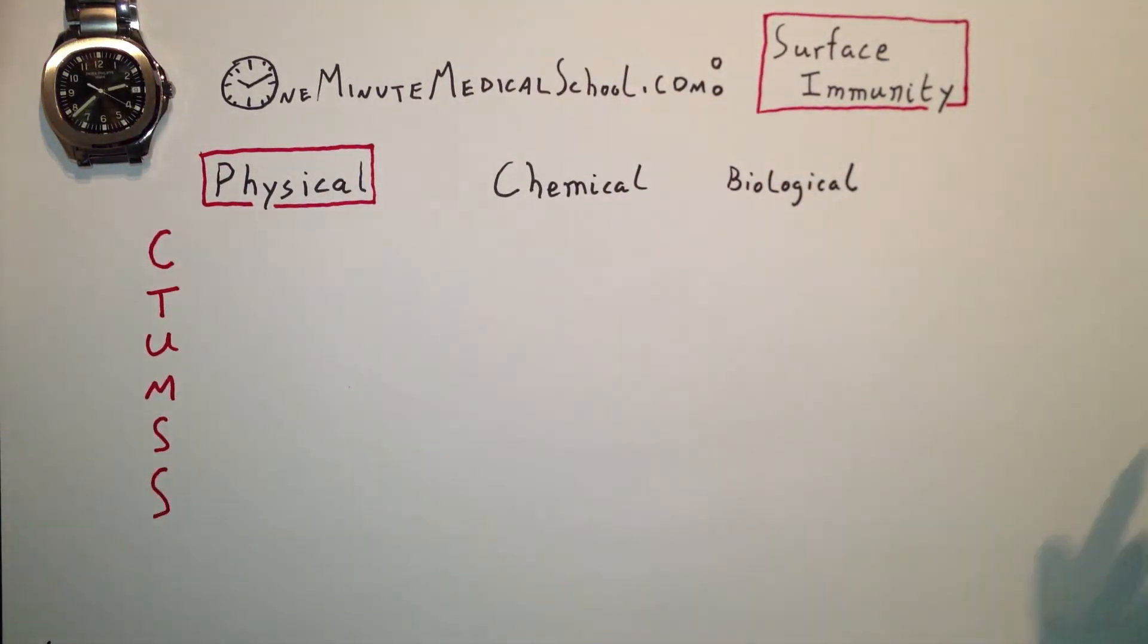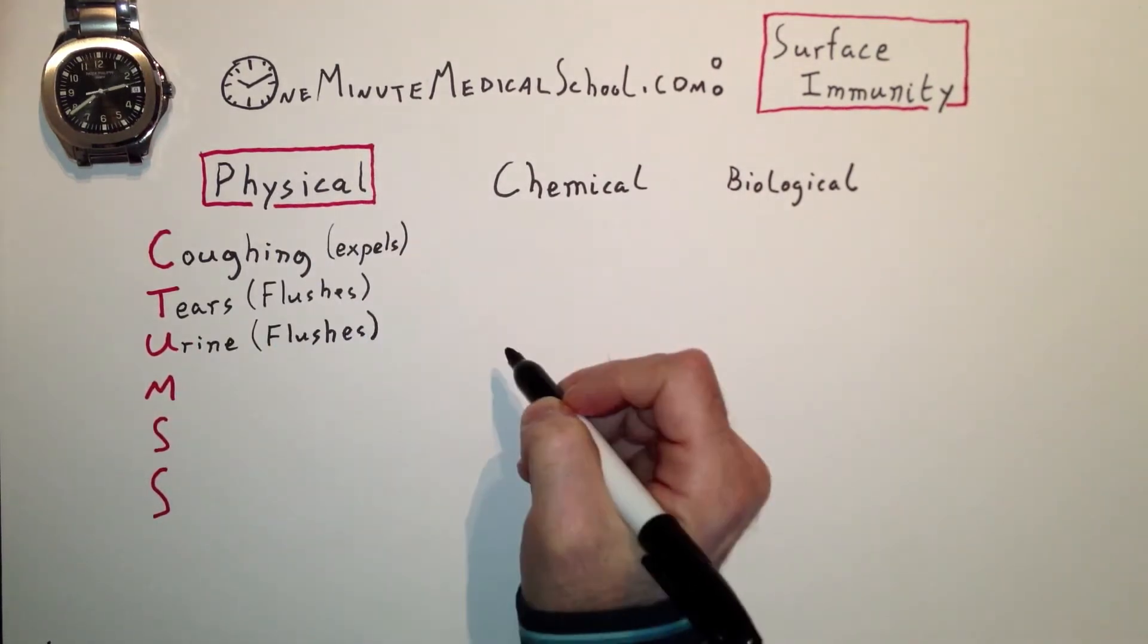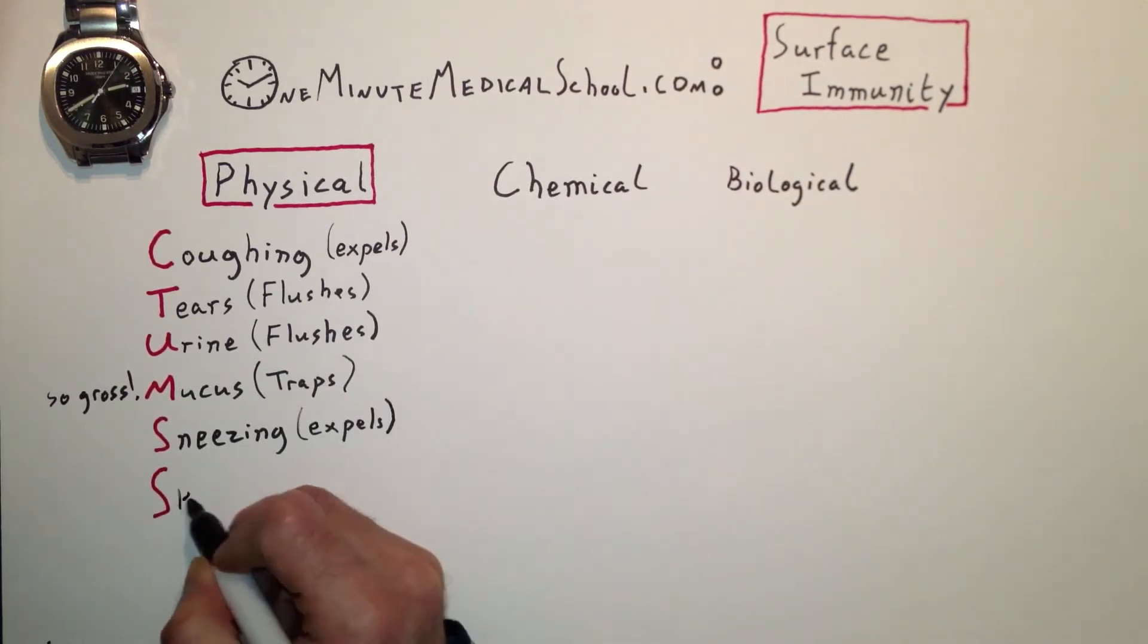Physical immunity is C-TUMS: coughing which expels, tears which flush, urine which flushes, mucus which traps, sneezing which expels, and skin.